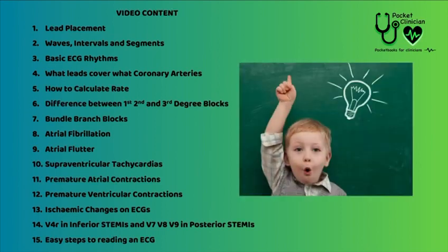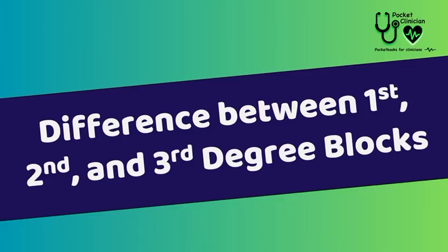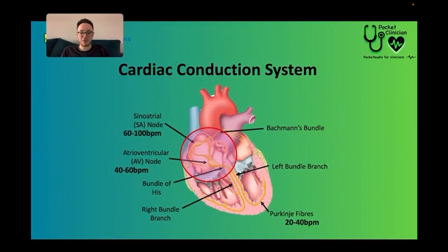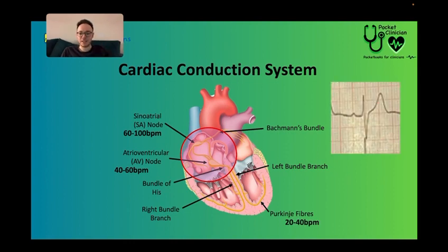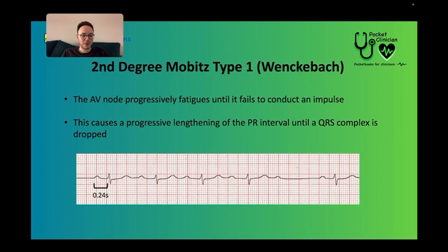Here is what you could be learning right now. Differences between first, second and third degree blocks. The first, second and third degree blocks all happen around the area of the SA node and the AV node. As you can see, the first PR interval is 0.24 seconds. It then gets progressively longer and longer until there is a dropped QRS.